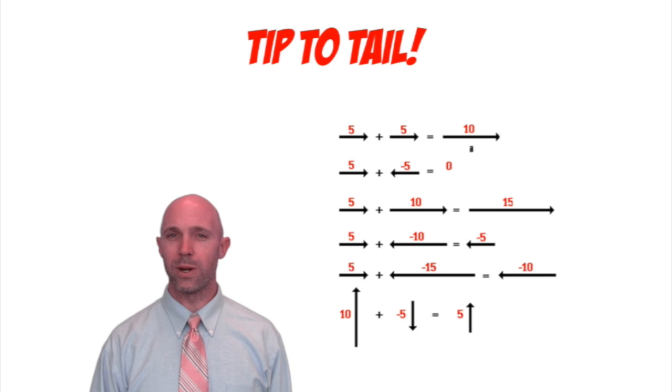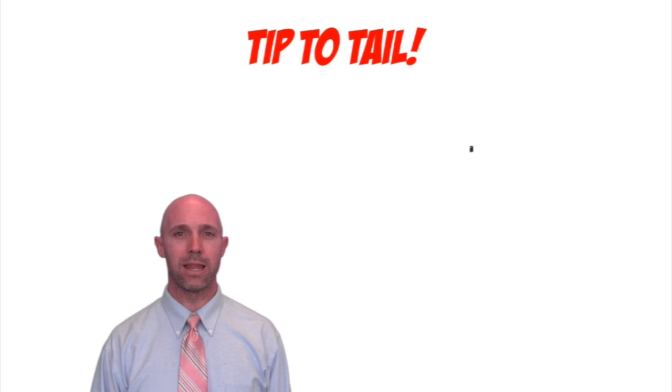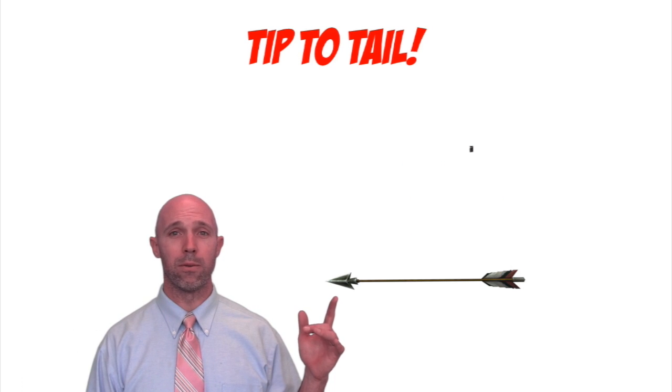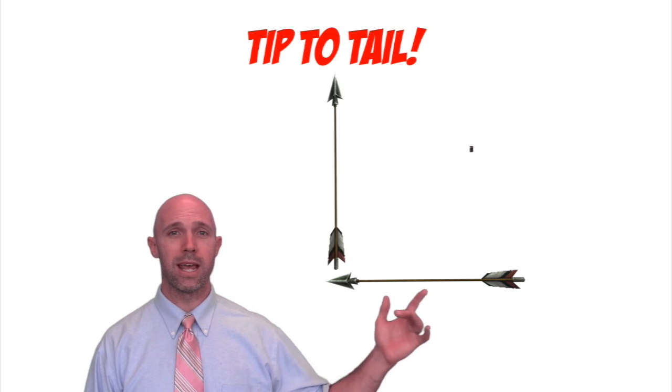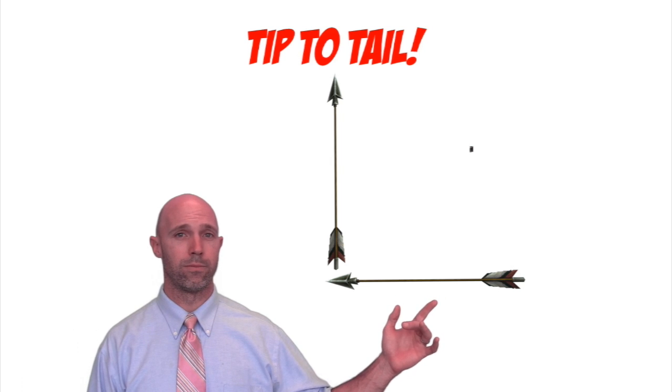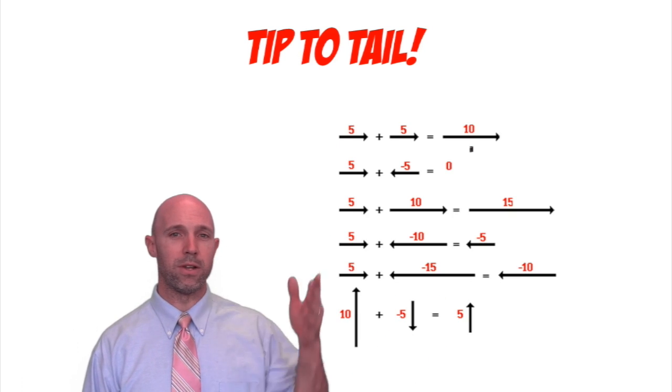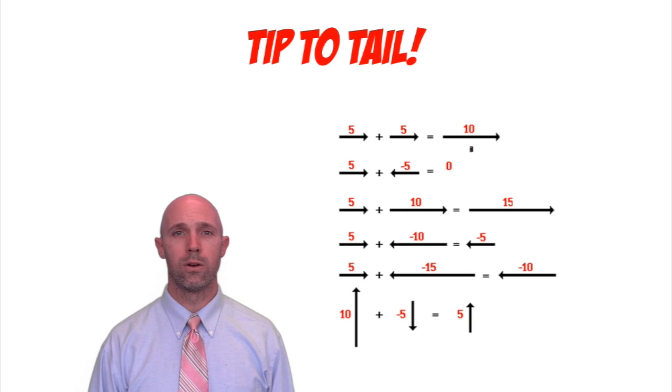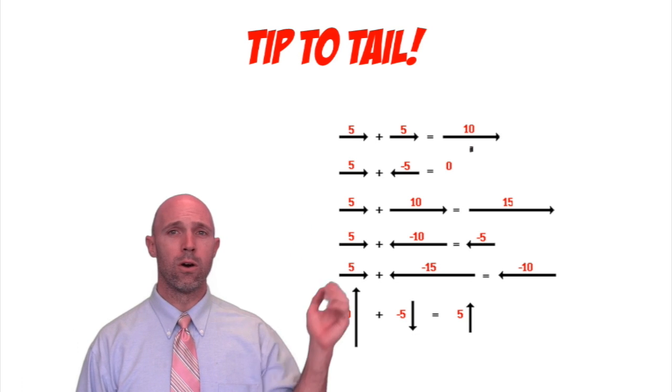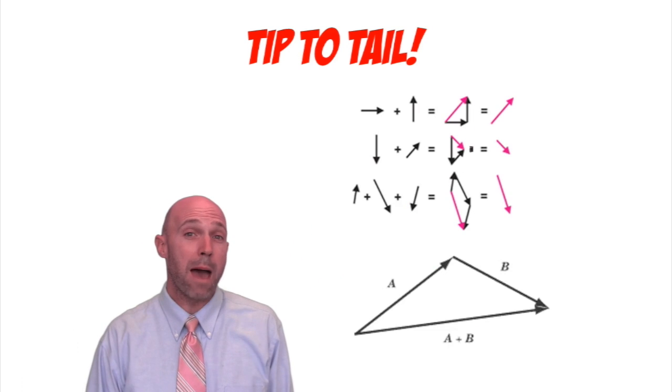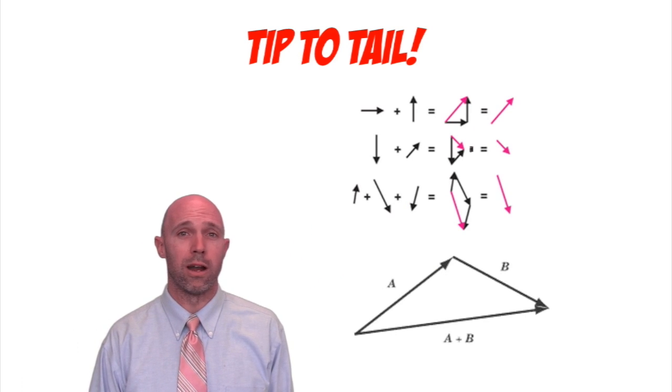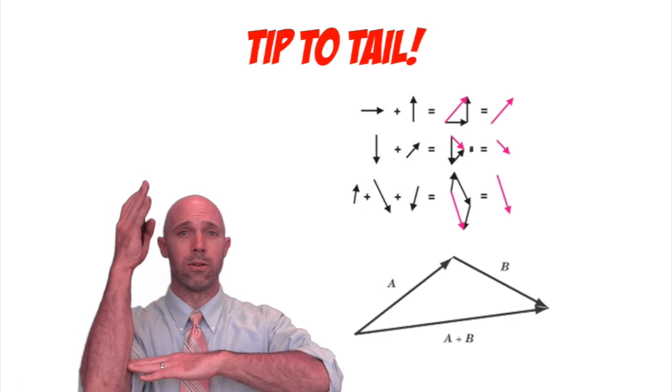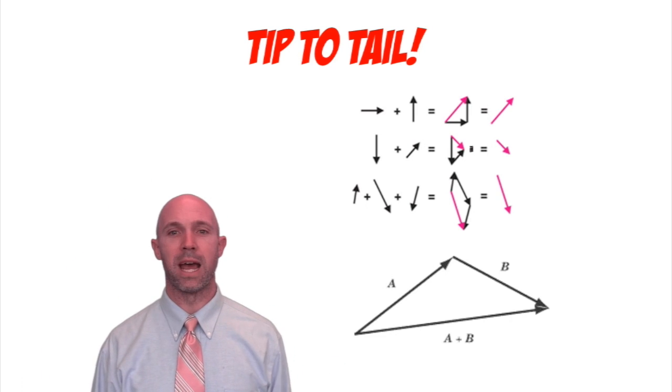A method that's really helpful when adding vectors is called tip-to-tail. We want to take the tip of the arrow and move it to the tail of another arrow. Here you can see a number of different examples where they can be additive or subtractive. These are all in the same direction, either vertical or horizontal. What happens when those arrows are at different angles, say a right angle or an angle different from 90 degrees?